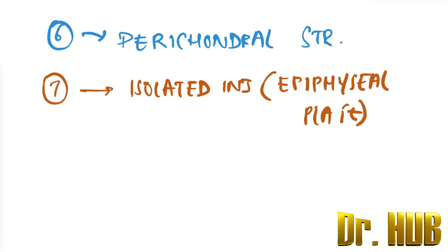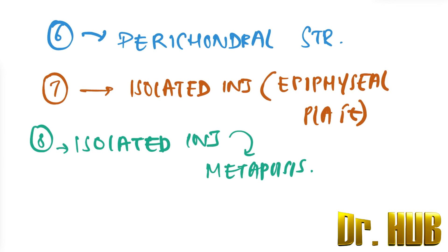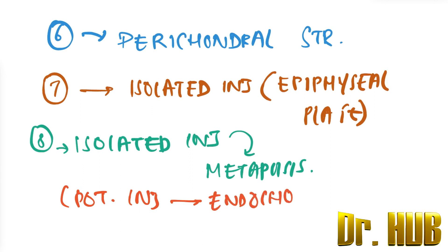Type 8 is an isolated injury to the metaphysis, with a potential injury related to endochondral ossification.